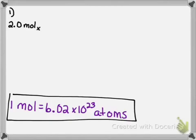So if we're going to convert two moles, that means we want moles to go away. And so we're going to put one mole on the bottom of our conversion factor, which means at the top we're going to put Avogadro's number, 6.02 times 10 to the 23rd atoms.